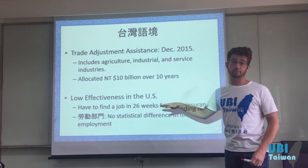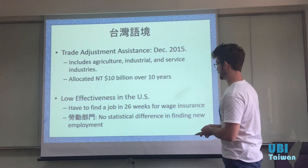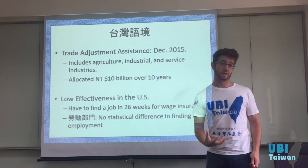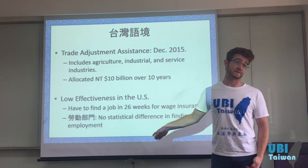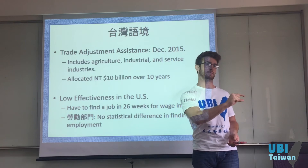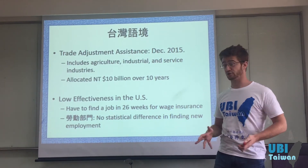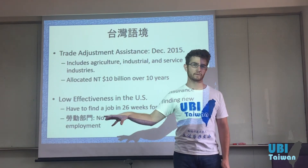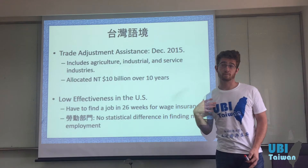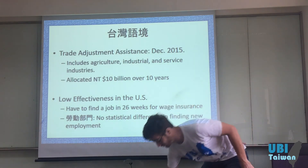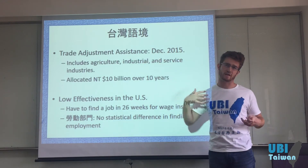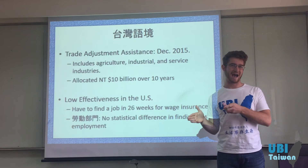Trade Adjustment Assistance is actually really ineffective. In other countries, especially the United States, they combine a lot of conditionality to it. In order to get Trade Adjustment Assistance in the US, you have to find a job within 26 weeks, which isn't a whole lot of time, and they only give you wage insurance — 50% of the wage you were making before. It's trying to soften the impact of losing a job, but compared to people who don't get Trade Assistance, the people who do are not any better off at finding a job. As part of US Trade Assistance, they also give job training, and nearly every government-administered job training program is really ineffective.